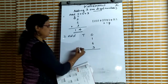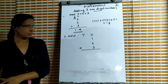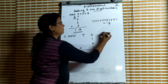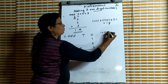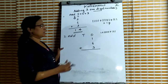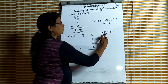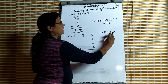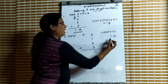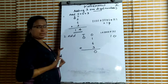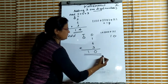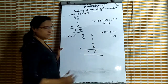This is the second question. 1 plus 6 plus 3. 1 plus 6 plus 3 equals 10. We write 0 in the ones place, and this 1 goes to the tens place. Then write that 1 itself. So the answer is 10. 1 plus 6 plus 3 is equal to 10.